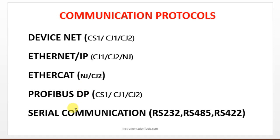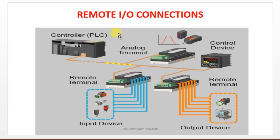For serial communication, RS232 can be used to make communication between the PLC and devices. We also have an option to connect remote IO using remote terminals, allowing the PLC to communicate with remote input and output devices.